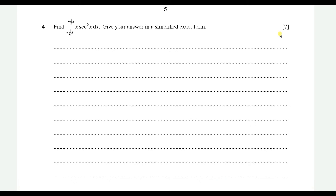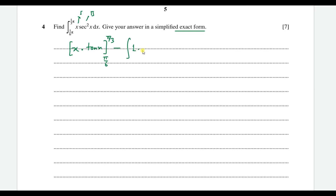Question 4: find the integral from π/6 to π/3 of x·sec²(x) dx. Give your answer in simplified exact form. We use integration by parts, taking x as the first function and sec²(x) as the second. This gives: [x·tan(x)] from π/6 to π/3, minus the integral from π/6 to π/3 of tan(x) dx.